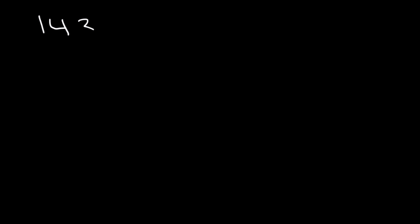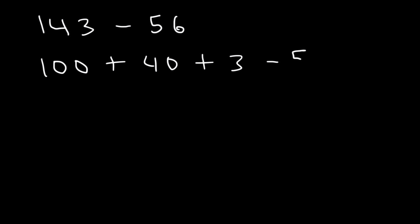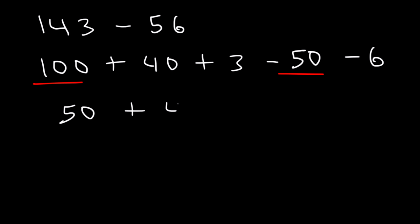Now what about 143 minus 56? We can write 143 as 100 plus 40 plus 3, and 56 as 50 and 6, making both negative. 100 minus 50 is 50. And 3 minus 6 is negative 3. You can do this in many different orders — just pick whichever you feel comfortable with.